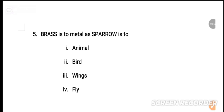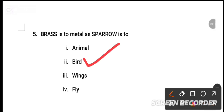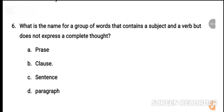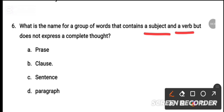MCQ number 6: What is the name of a group of words that contains a subject and a verb but does not express a complete thought? The answer is a clause. Option B — clause — is the correct answer, as it contains a subject and verb but does not express a complete thought.